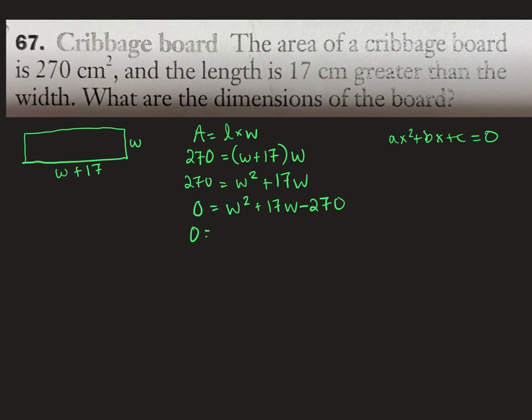Now we need to factor that. And if we can't factor, then we use quadratic formula. But I think we can. So W times W gives us W squared. Now we're multiplying to negative 270. The first thing that popped into my head was 10 times 27 because 270 ends in a zero. So 10 goes into that. And sure enough, 10 and 27, the difference between those two numbers is 17, which would give us that middle number.